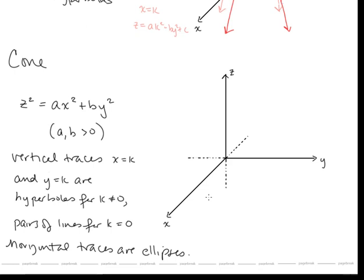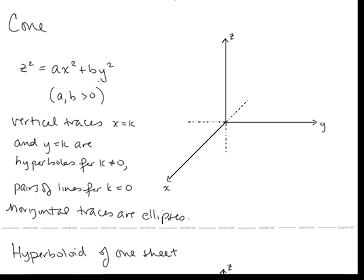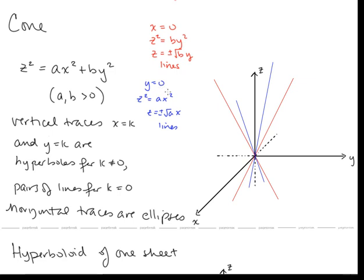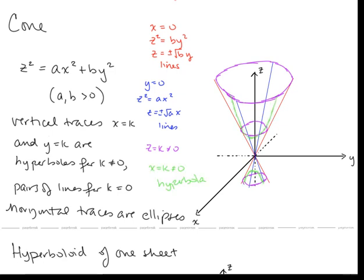Now let's look at an example of a cone. The equation is z² equals ax² plus by², where a and b are both positive. Starting with x equals 0 and y equals 0, we get pairs of lines. With z equal to a constant, we get elliptical shapes for horizontal traces. Notice if z equals 0, then since a and b are positive, x and y must both be 0 — that's only the origin. So we take z equals k where k is not 0 and sketch ellipses. Taking x or y traces that are not 0 gives hyperbolic curves. That's the basic shape of our cone.